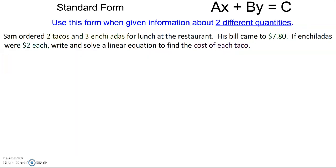The next pattern we're going to look for is standard form, which is ax plus by equals c. We're going to use this form when we're given two different quantities. Notice that the form of the equation doesn't show us the slope, and it also doesn't show us the y-intercept. So we're not going to be given the rate of change in this problem — we're going to be given information about two separate types of things.